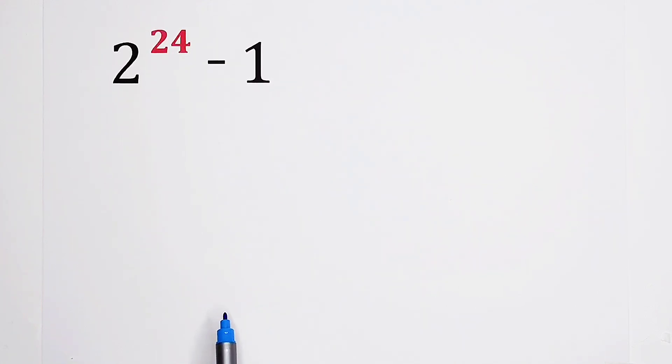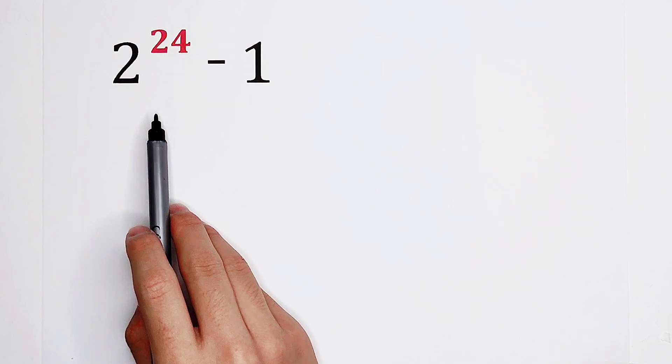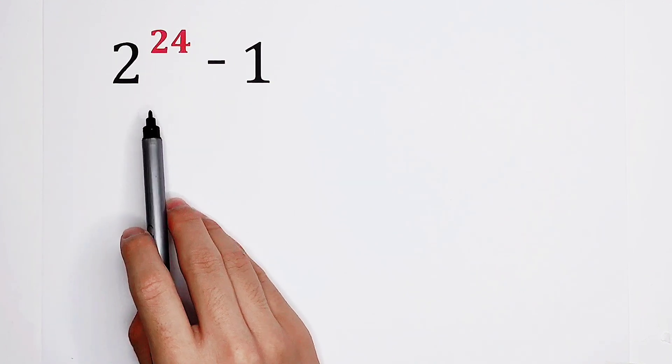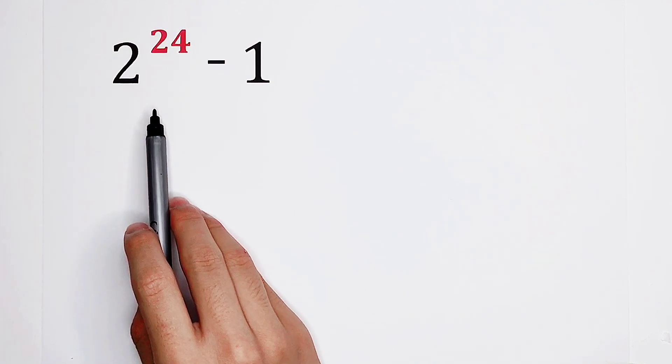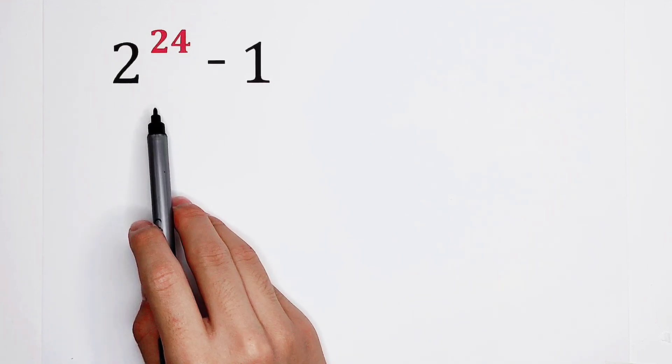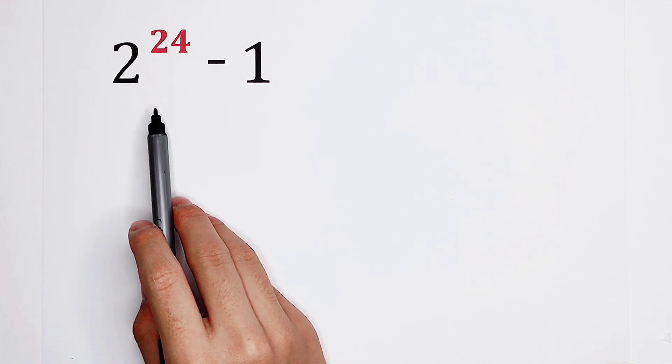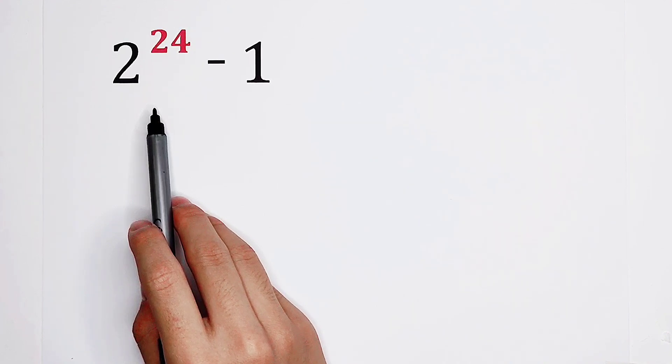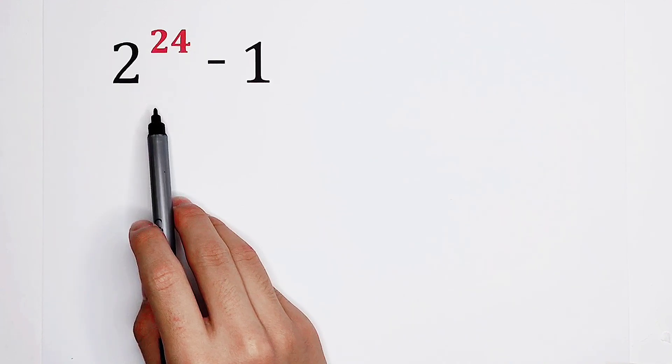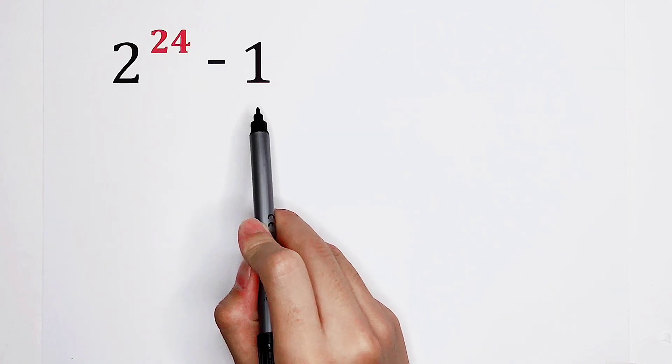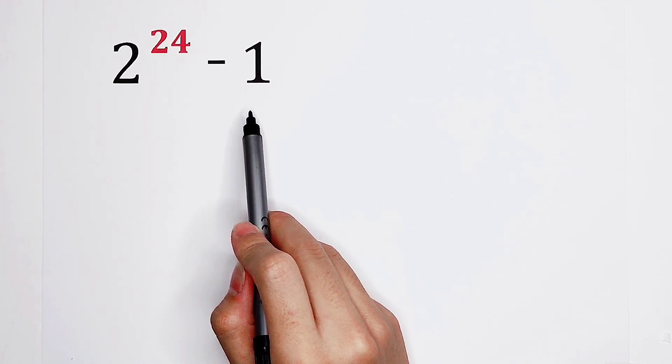I have a trick. Look, this exponent is nice. Actually, 24 is an even number. It is 2 times 12. So what can I do about it? 1 can also be written as 1 squared. It is also a square number.